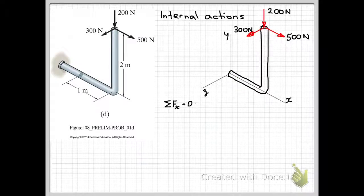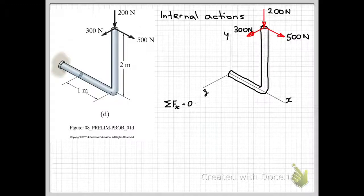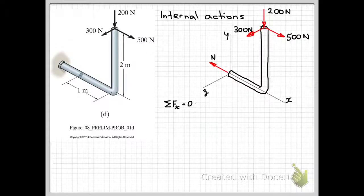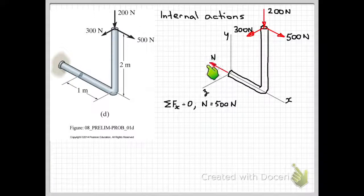Let's start with the sum of the forces in the x direction equals zero. In this problem we have a 500 newton force acting in the x direction, so that needs to be resisted at the internal face. We can put that in and recall that N, and then write out our equation, so we get the internal axial force N is equal to 500 newtons.